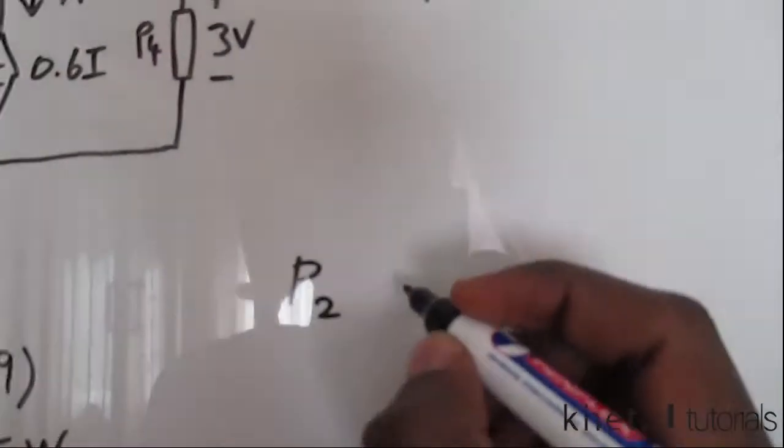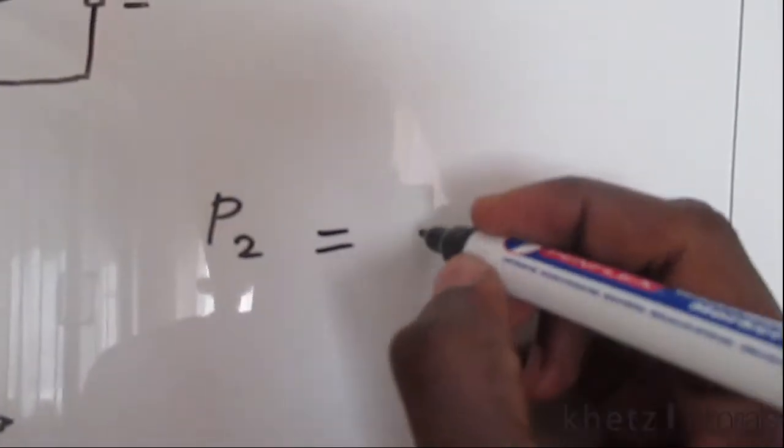So now P2 is equals to VI, which is equals to 2 and the same current of 9 amperes. So our answer will be 18 watts.